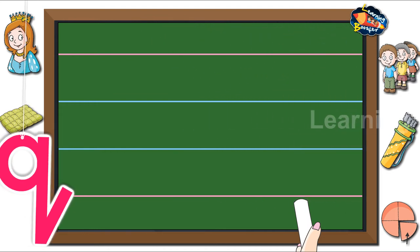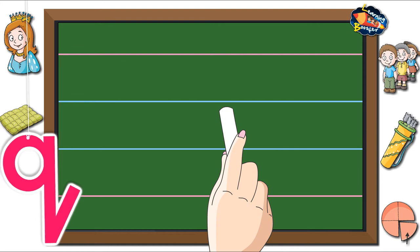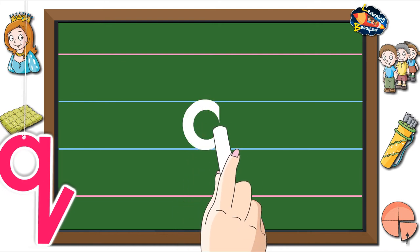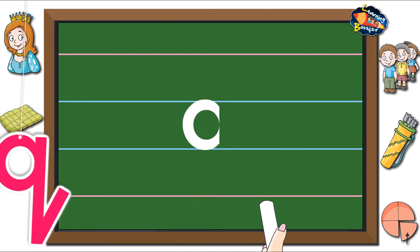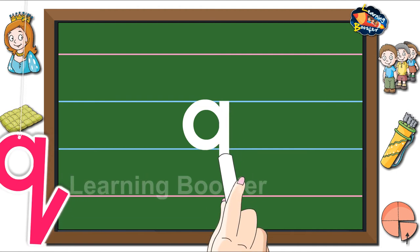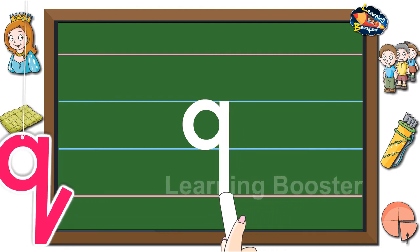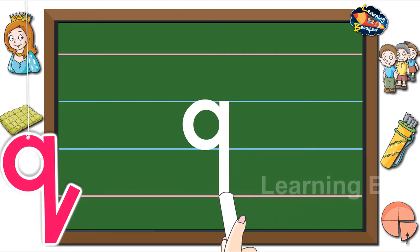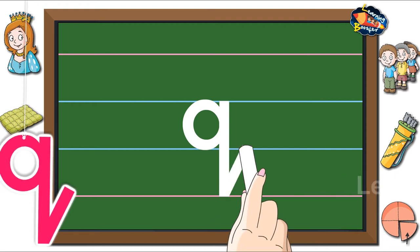Letter Q. Start from the waistline and make a curve to the left till the waistline. Then, go to the waistline and make a standing line till the tail line ending with a hook tail to the right.